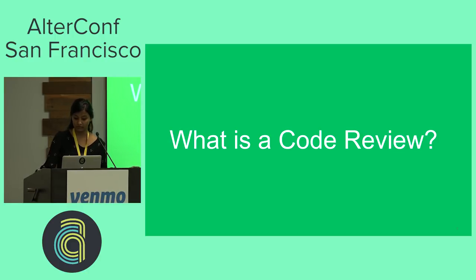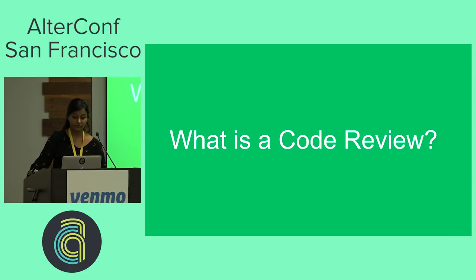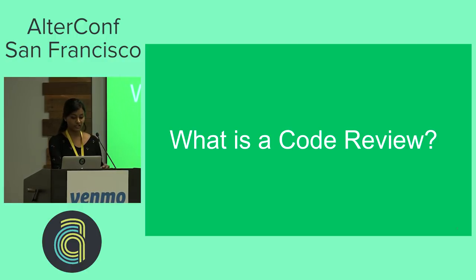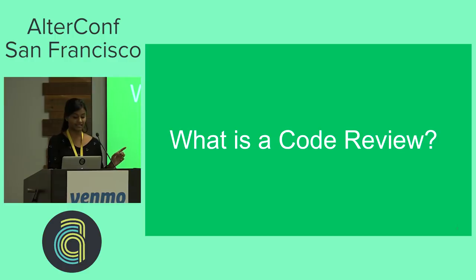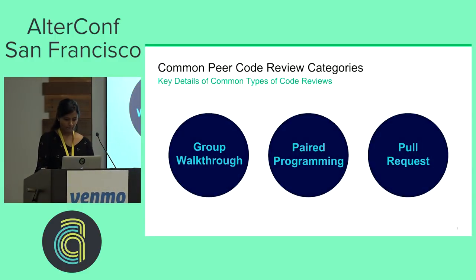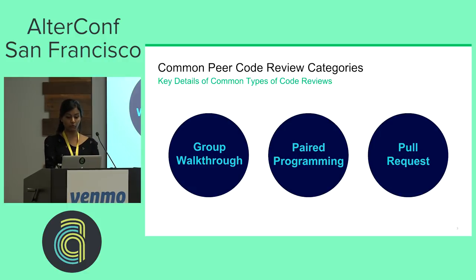Then they request that their code be reviewed. The review involves other developers on the team evaluating the changes. Various code review tools allow people to make comments on specific lines of code as well as the change set as a whole. After some back and forth, the reviewer and the reviewee agree that the code looks good and it gets merged into the master code base. There are three common types of peer code reviews: group walkthroughs, pair programming, and pull requests.